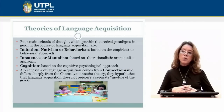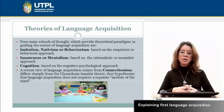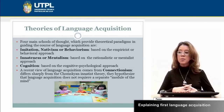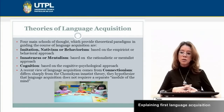What are the theories of language acquisition? We have three main theoretical hypotheses about the first language acquisition. They are: imitation, nativist or behaviorist, which is based on the empiricist or behavioral approach; and we have the innateness or mentalist, which is based on the rationalist or mentalist approach.